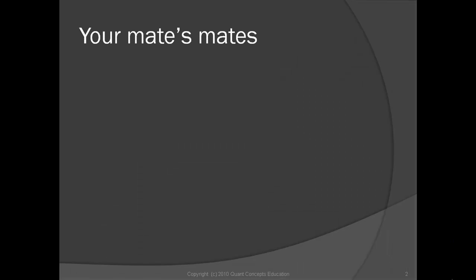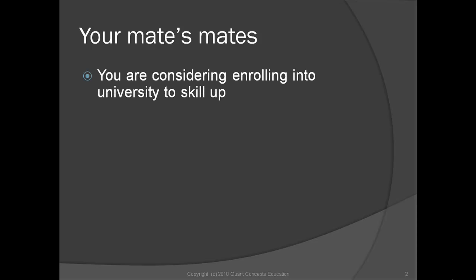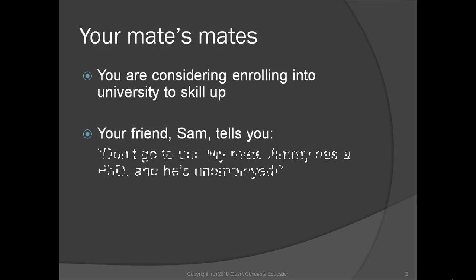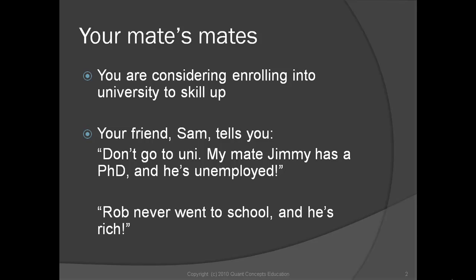Suppose you've been in the same dead-end job for 10 years and finally decide that you need to skill up to improve your career. You consider enrolling into university in order to gain some valuable skills that will hopefully improve your job prospects. However, your friend Sam has some thoughtful advice for you. Mate, don't waste your time at uni. My mate Jimmy is a PhD and he's unemployed. Interesting. Sam continues. Rob never went to school and he's loaded with cash.